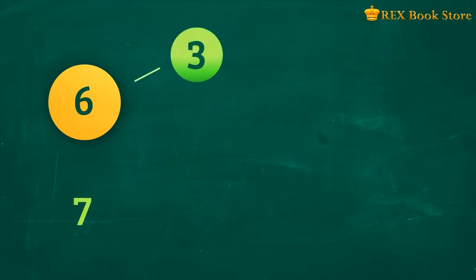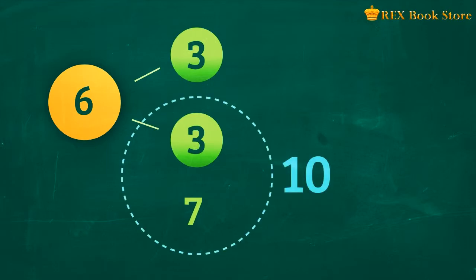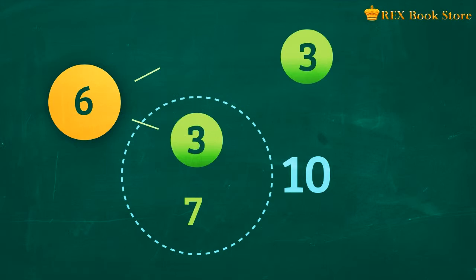We can also use number bonds to help us out. 6 as a whole can be represented by two parts, 3 and 3. 7 and 3 can make 10, so we're left with 3. From this process, we can see that 10 plus 3 is equal to 13.